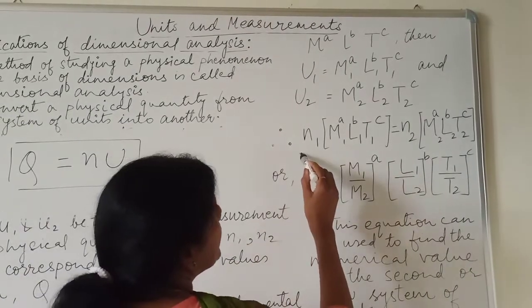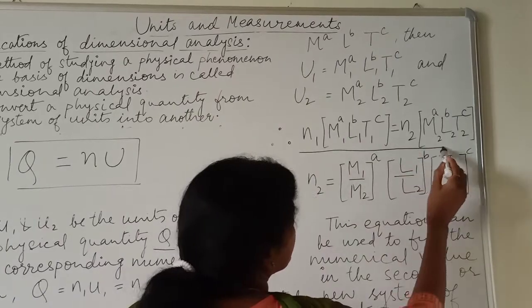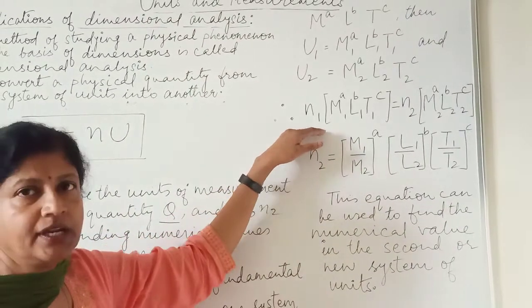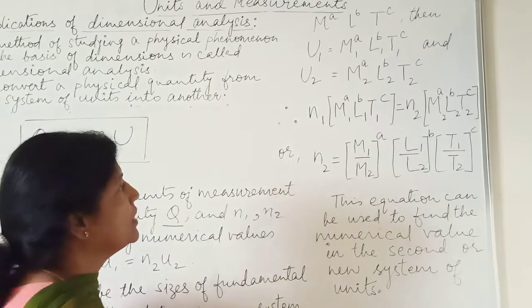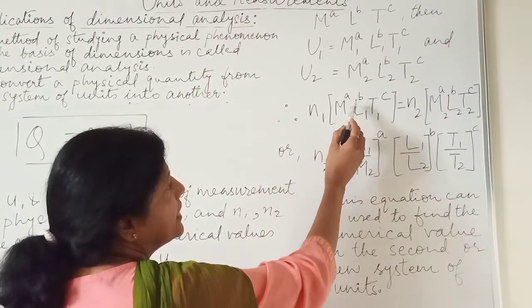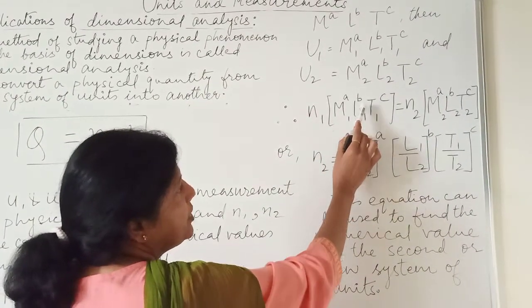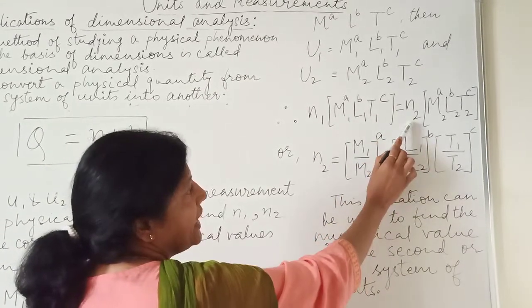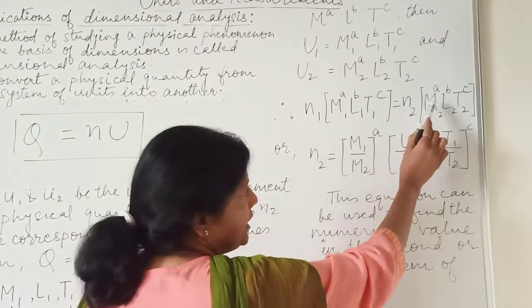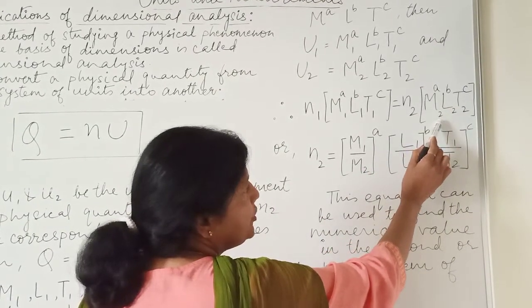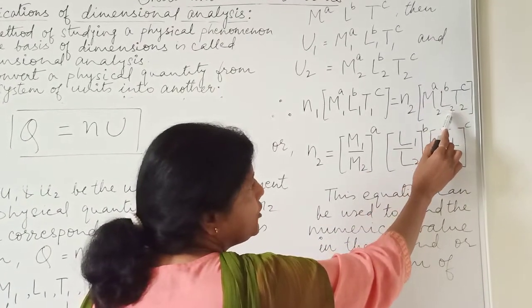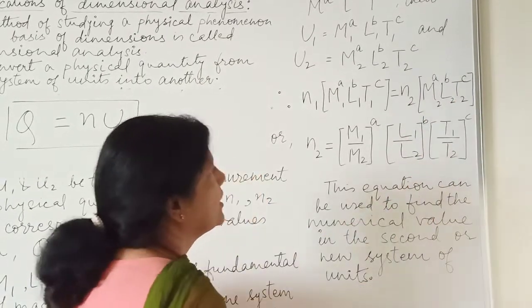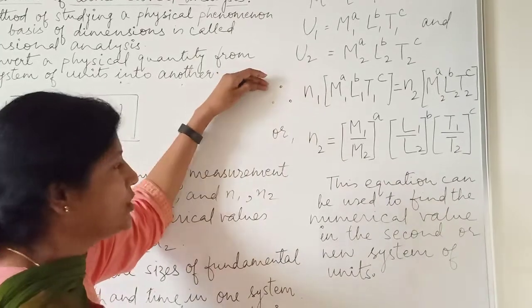Therefore, N₁ M₁^A L₁^B T₁^C is equal to N₂ into M₂^A L₂^B T₂^C.